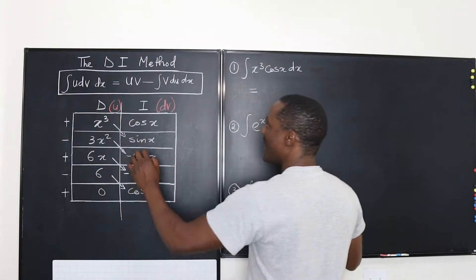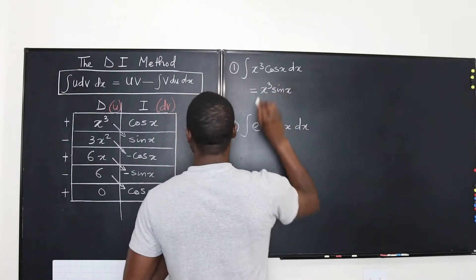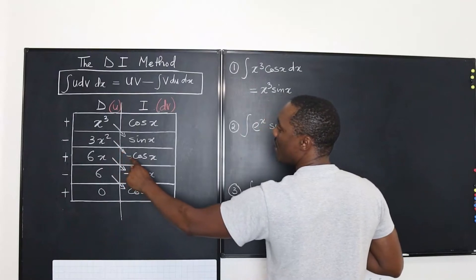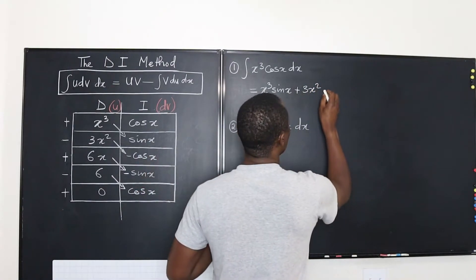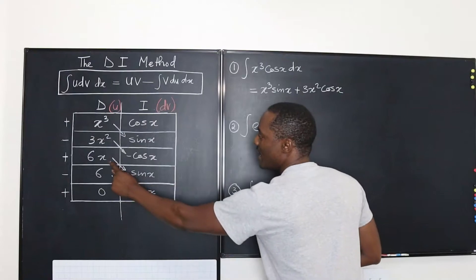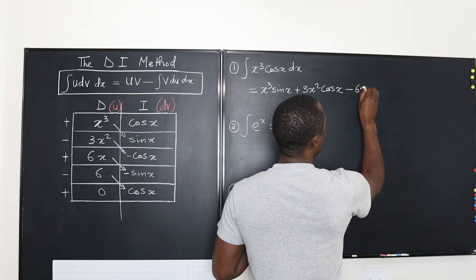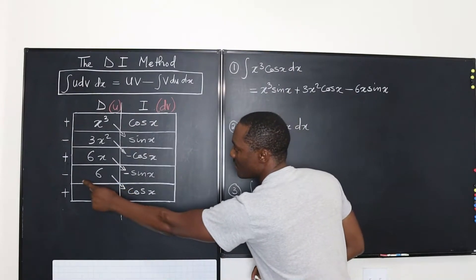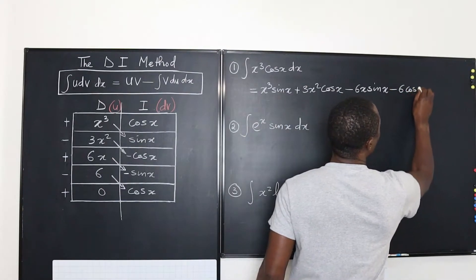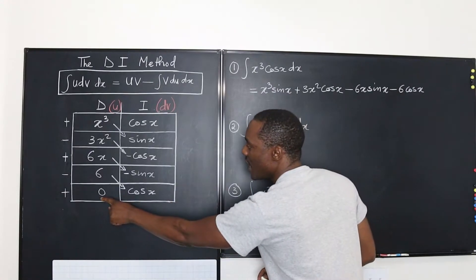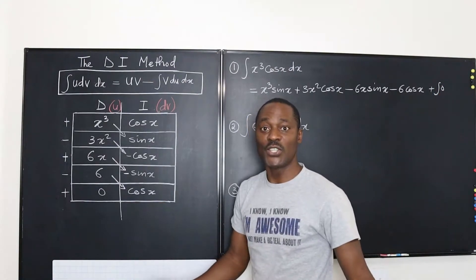The answer to this problem will be X cubed sine X, then followed by negative 3x squared times negative — so it's going to be plus 3x squared cosine X, followed by minus 6x sine X, minus 6 cosine X. There's one more thing to add, which is the integral of 0 times cosine X. But we know that the integral of 0 is 0, so we don't need to write that.